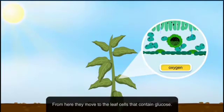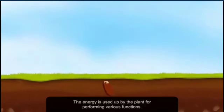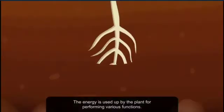From here, they move to the leaf cells that contain glucose. A chemical reaction occurs in which oxygen breaks down glucose into carbon dioxide and water, releasing energy. The energy is used up by the plant for performing various functions.